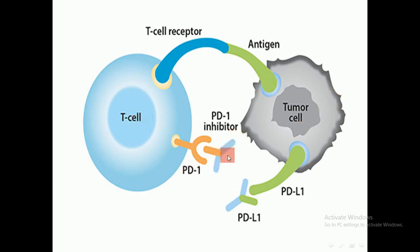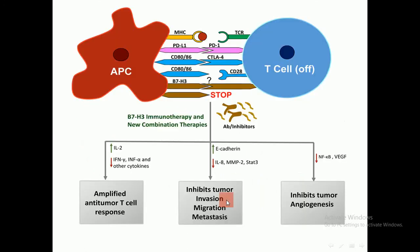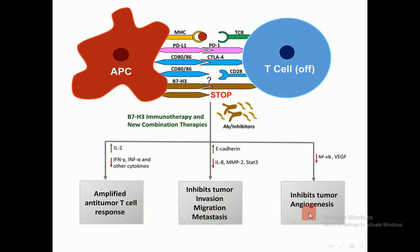This figure shows the T cell and tumor cell, and how antibodies bind to PD-1 and PD-L1 to inhibit this checkpoint. In another diagram, the antigen-presenting cell and T cells are shown with the first and second signals, where the second signal is blocked by antibody inhibitors. This leads to an amplified anti-tumor T cell response, inhibiting tumor invasion, migration, and tumor angiogenesis.